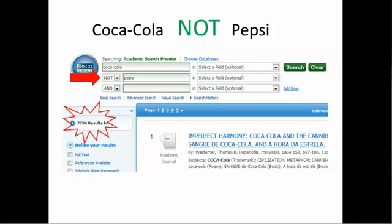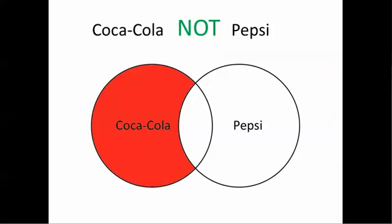This is 846 fewer results than I got searching for Coca-Cola alone. What's going on with those 846 articles? They must also include the keyword Pepsi. By using the NOT operator, I removed the subset of Coca-Cola articles that also talked about Pepsi.